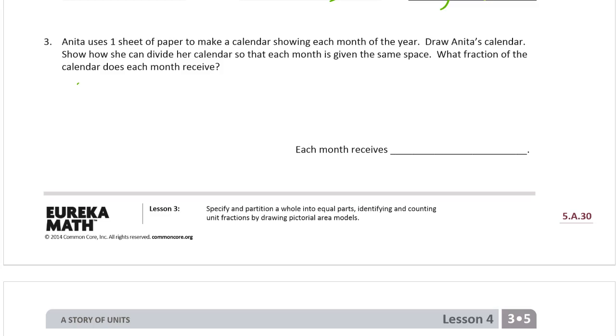Let's draw her piece of paper. It's a big rectangular piece of paper, and you have to know how many months there are in a year. There's 12 months in a year. So I need to divide this calendar up into 12 equal pieces. So if you think about it, this is a lot like the area models that we were just doing. So we need a rectangle, and we need 12 equal parts.